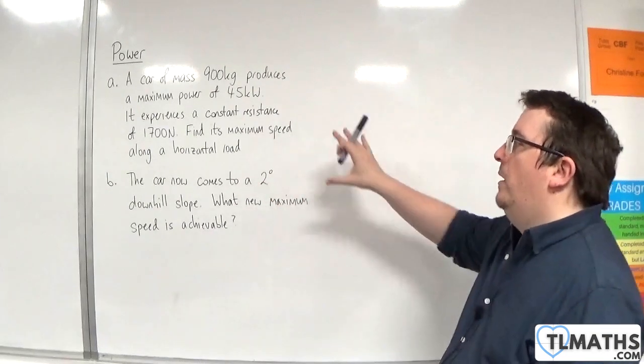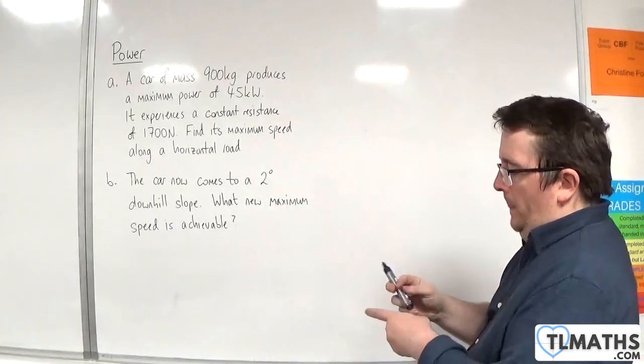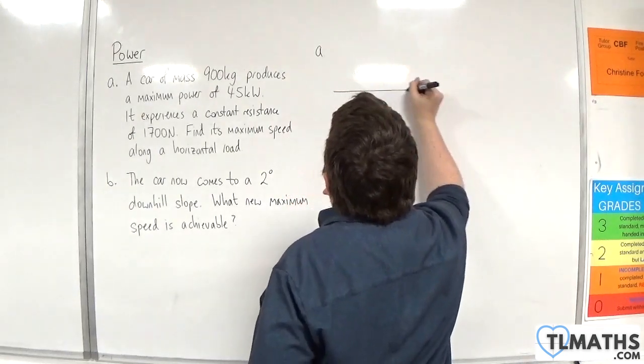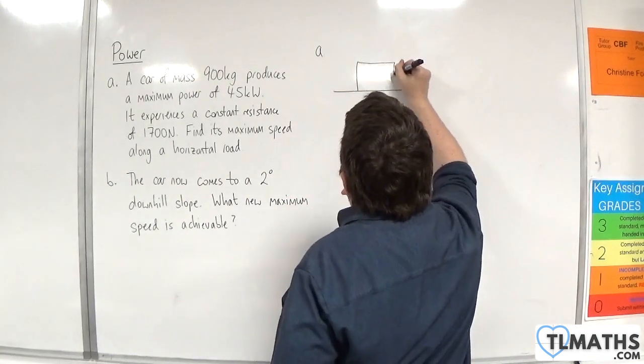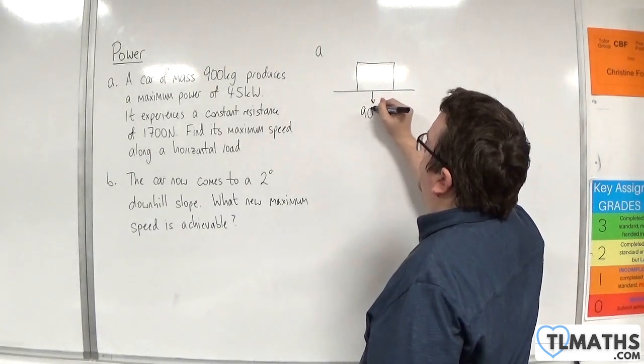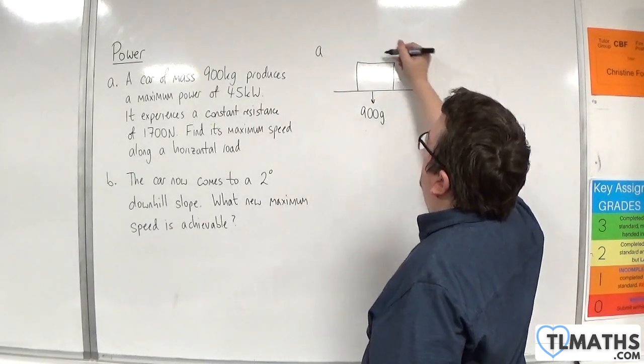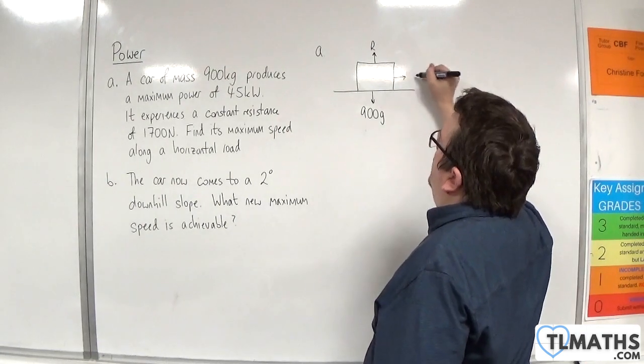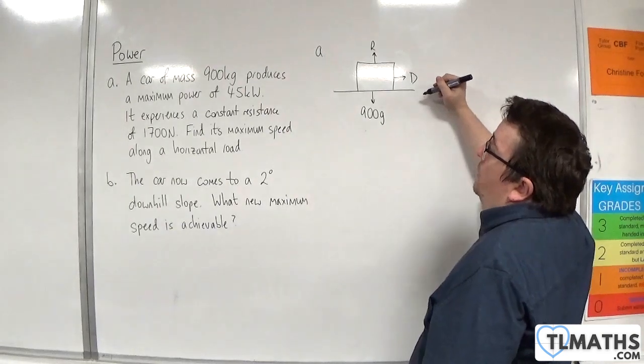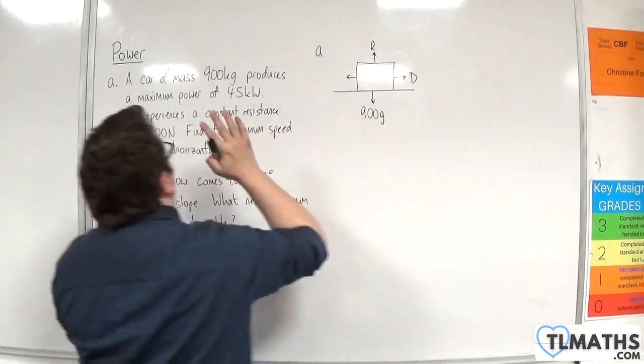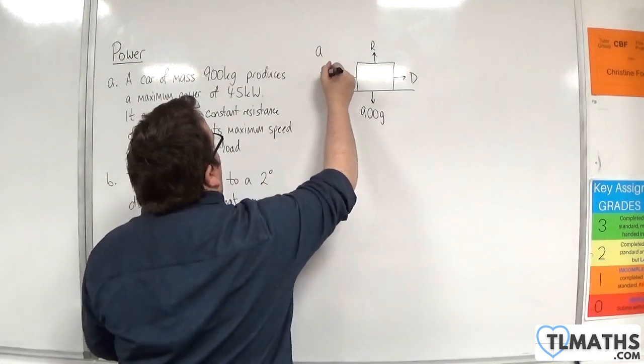We're just going to deal with part A for the moment. I'm going to draw a diagram. Here is my car. It's got a mass of 900 kilos, so weight 900g. There's going to be a normal reaction force because it's in contact with the surface. I'm going to let D go towards the right. That's the driving force.